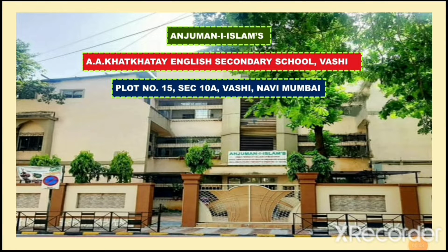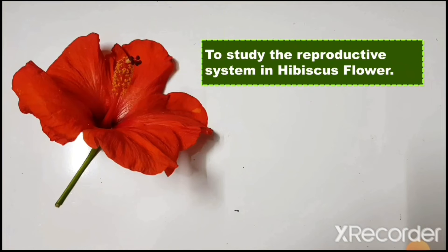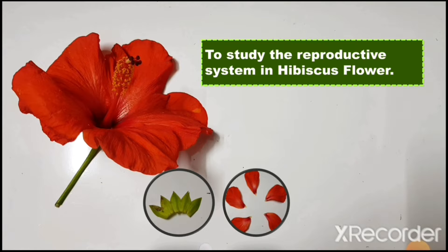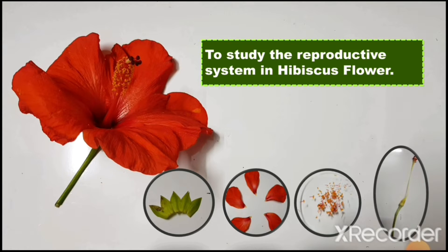Assalamu alaikum students. Today we are going to study the reproductive system in hibiscus flower. We mainly use hibiscus flower to study reproductive system in plants because it has four floral whorls: calyx, corolla, androecium, and gynoecium. It is a bisexual flower as it contains both androecium and gynoecium.